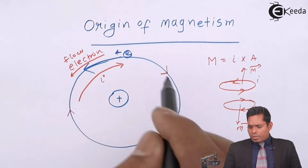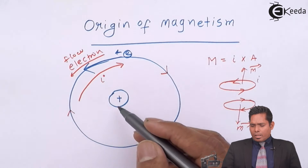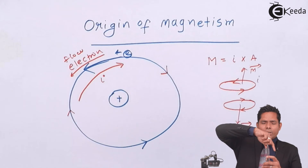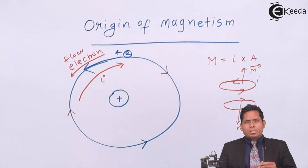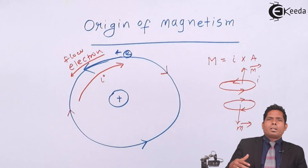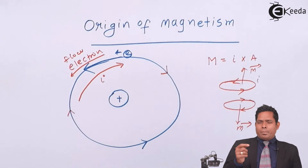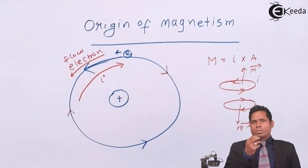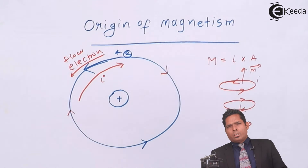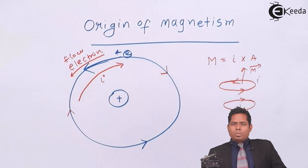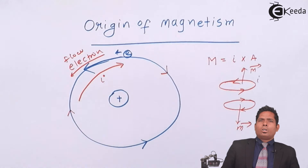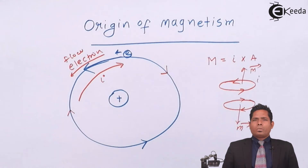Because of this current loop, it is equivalent to a current loop in the downward direction. Because of the electron's orbital rotation, the dipole moment produced due to the orbital motion of the electron is called the orbital dipole moment. Because it is also rotating about its own axis, that will also give rise to the spin dipole moment.